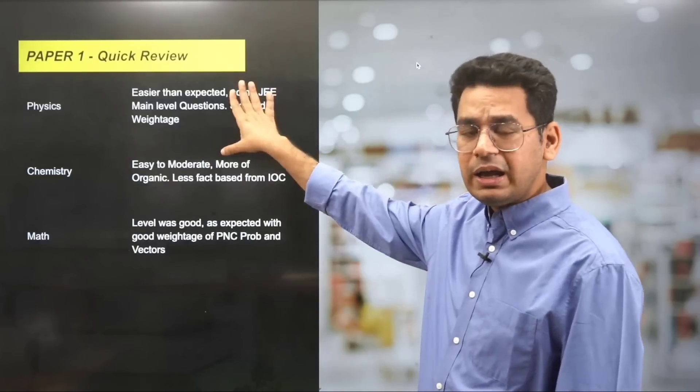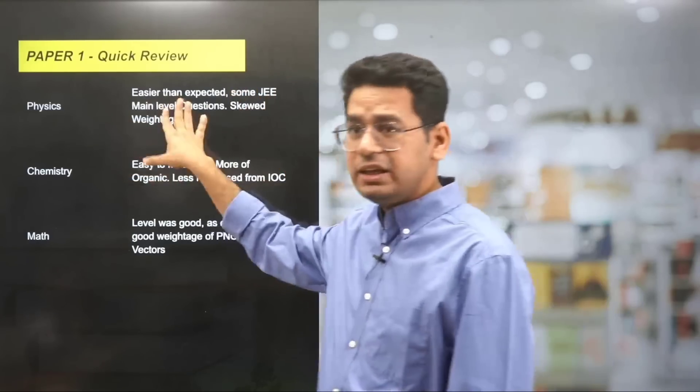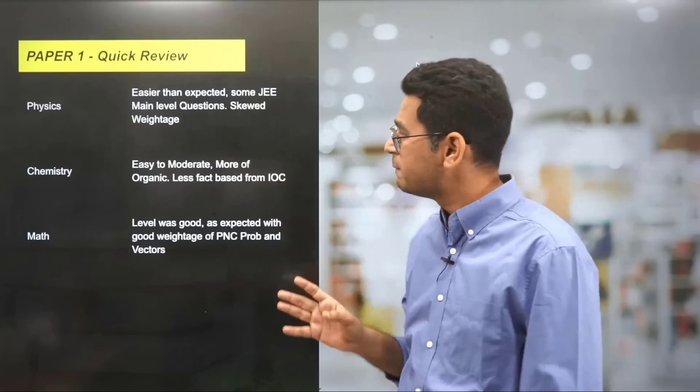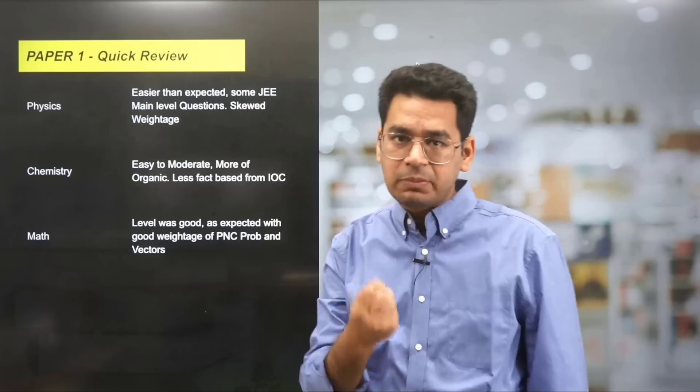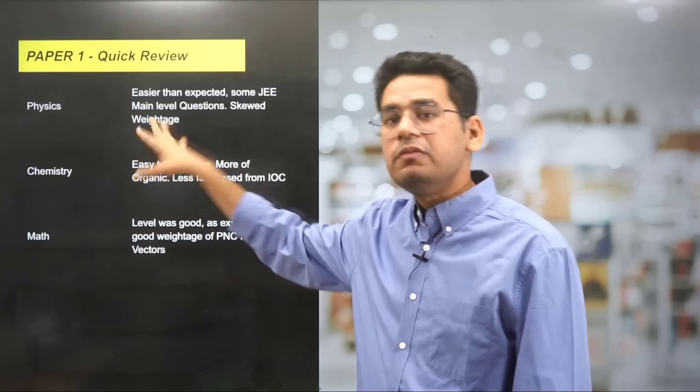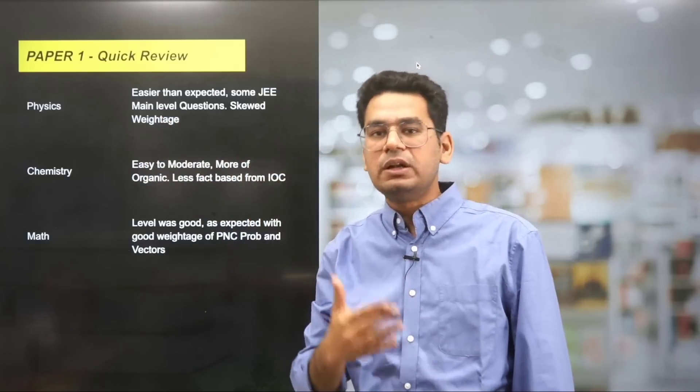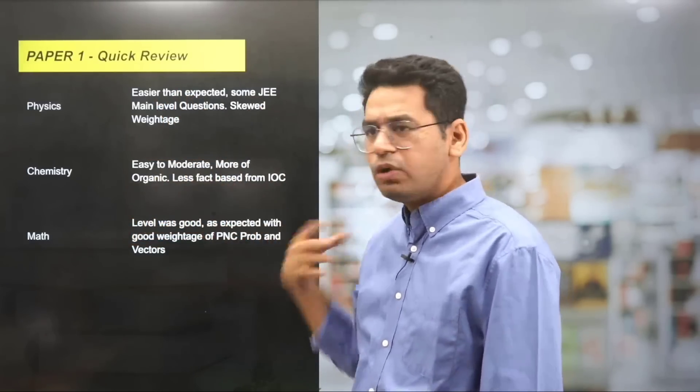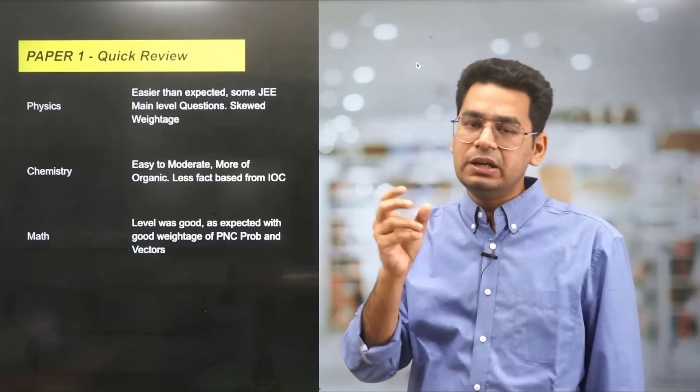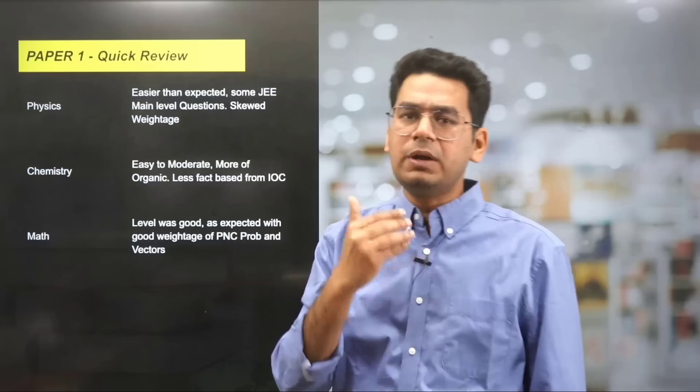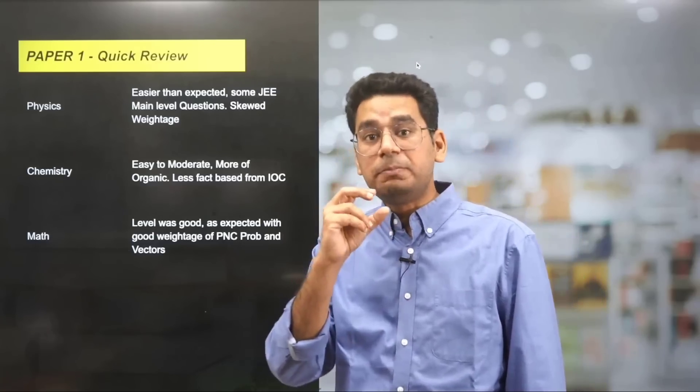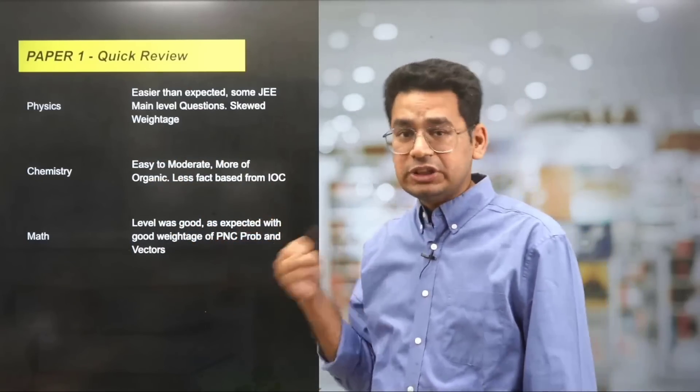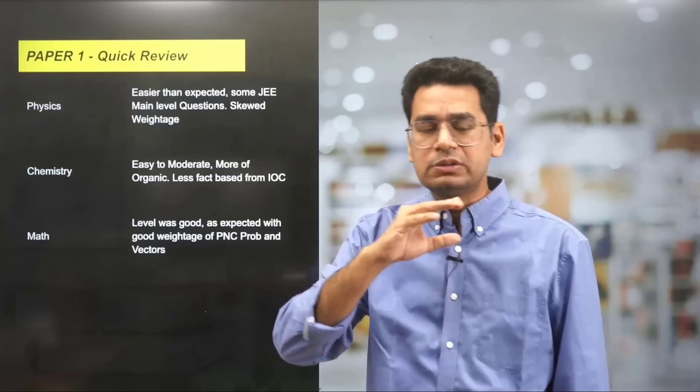Paper 1 quick review: Paper 1, I again repeat, was easier than 2022. Physics easier than expected. Some direct questions or I should say similar level to JEE Mains category questions were asked, and skewed weightage was seen in both papers. Electromagnetism weightage seemed less, but we are still skeptical about this; we will see the paper once it's given by JEE Advanced. Chemistry again easy to moderate, more of organic, less of factual-based inorganic. Most questions were from coordination chemistry. You understand that the paper will mostly try to check you. Math was very good level. The level that should be there at advanced level was maintained here, and Paper 1 somewhere was a difficult sword and good paper. As expected, PnC, probability, and vectors were asked.